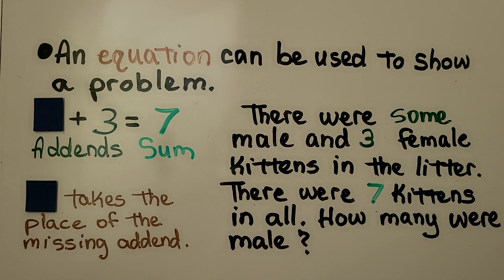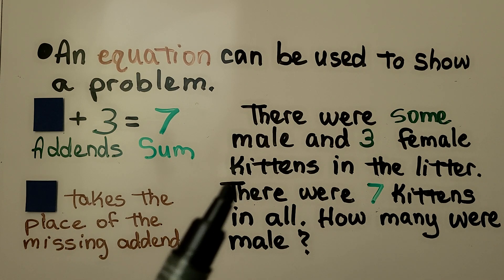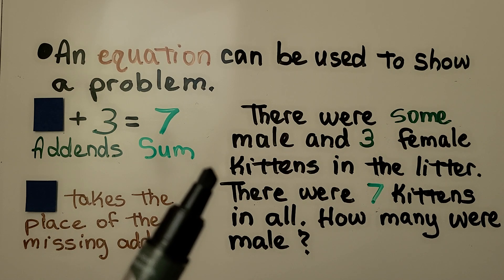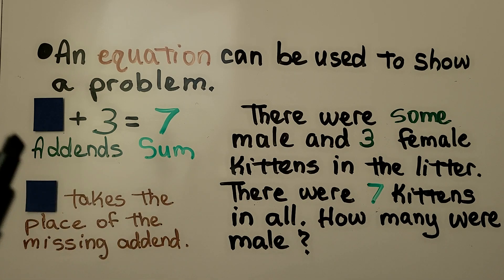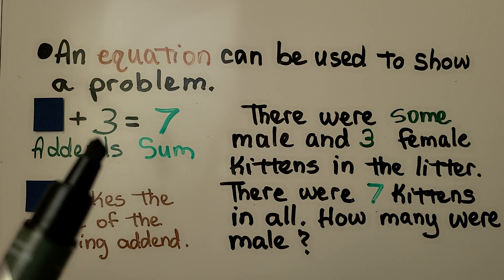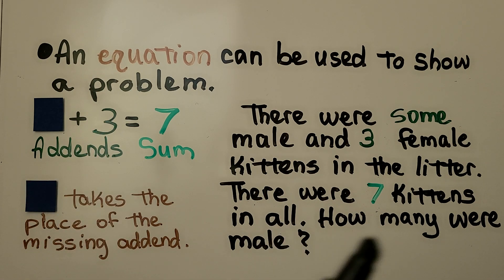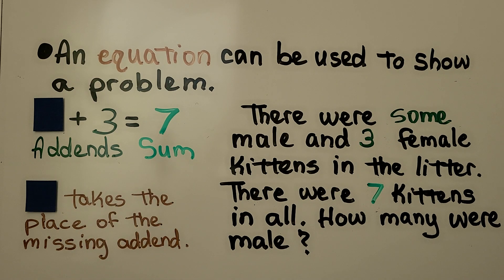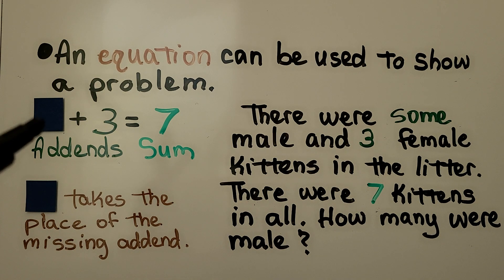An equation can be used to show a problem. There were some male and three female kittens in the litter — we have some male, we don't know how many, and three female kittens. There were seven in all, so that's our sum. How many were male? We use a square to take the place of the missing addend.